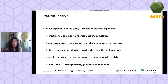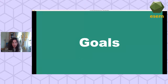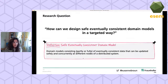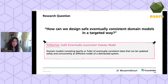Unfortunately there is only very little engineering guidance available directly aimed at these challenges. Correspondingly, our research question was: how can we design safe, eventually consistent domain models in a targeted way? A safe eventually consistent domain model is an ordinary domain model according to domain-driven design, consisting partly or fully of eventually consistent data, and it can be updated safely and concurrently at different nodes of your distributed system.